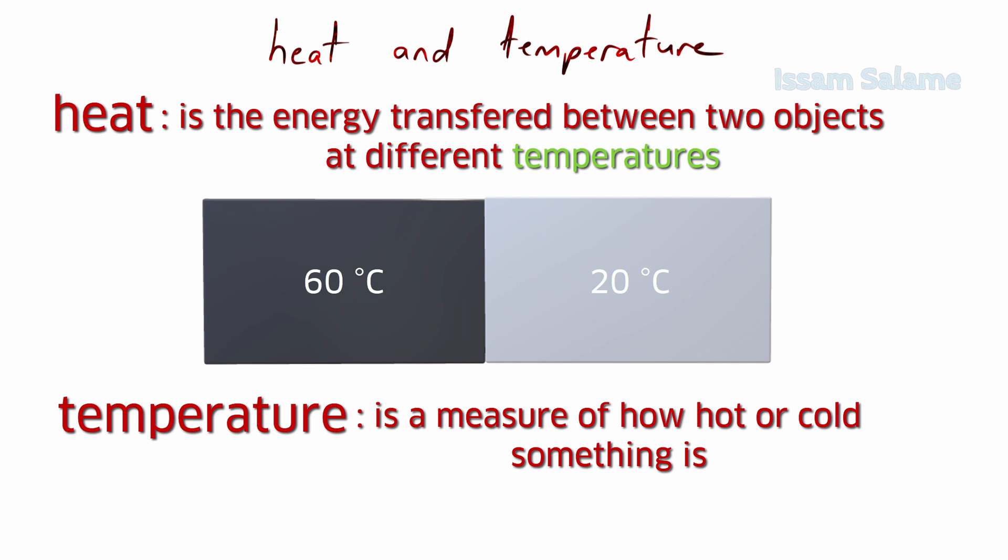Usually heat and other forms of energy are measured in units called joules, while temperature is measured in degrees Celsius, Fahrenheit, or Kelvin. Usually we use Kelvin in chemistry.